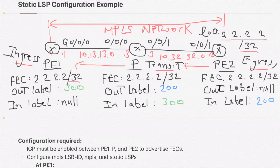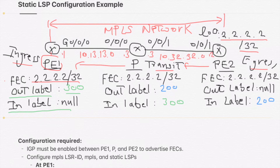The network 2.2.2.2/32 is the FEC network and it is received at the PE1 router. We will assign the out label 300 at PE1, the ingress router. The in label here is null because we are at the ingress router — the ingress router will not receive traffic for this network with a label, since this is the first point of the MPLS network. It will start to add the MPLS header with label 300 to be sent from PE1 to the P router.